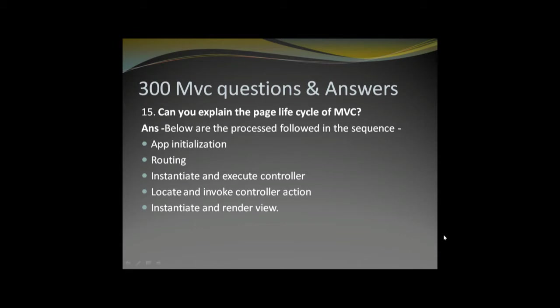Can you explain the page life cycle in MVC? The following processes are followed in sequence: App initialization, then Routing, then Instantiate and Execute Controller, then Locate and Invoke Controller Action, and finally Instantiate and Render View.